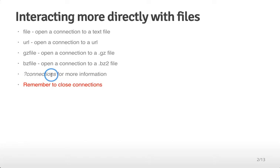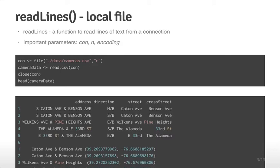One thing to keep in mind: we're going to be opening connections to files and R will probably automatically close those connections if you exit the program. But it's important to remember to close your connections because it's good programming practice, especially if you're going to be sharing your analysis files with other people. We'll start off using a connection and the function readLines to read data directly from a local file.